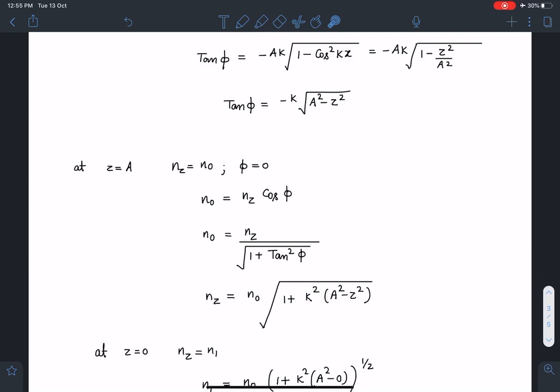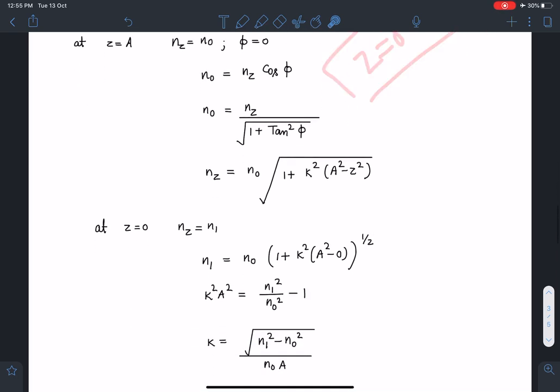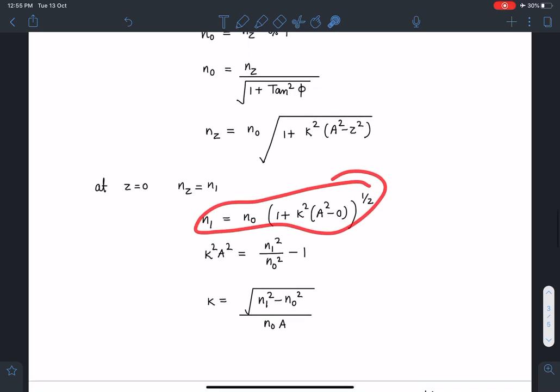But I have another boundary condition, that is at z equal to 0, refractive index nz is n1. Let's use that logic also. So when I do that I am getting the value of k which is coming as root of n1 square minus n0 square divided by n0 a.